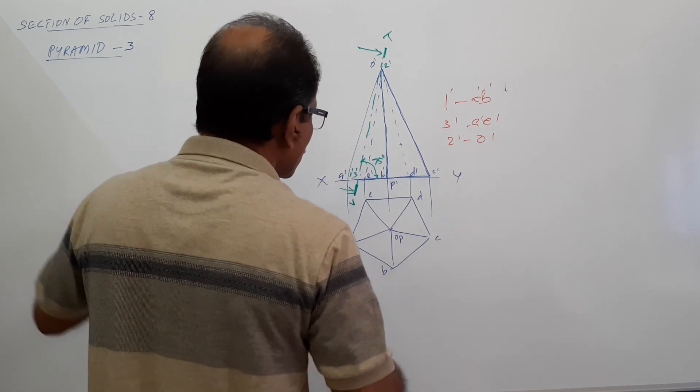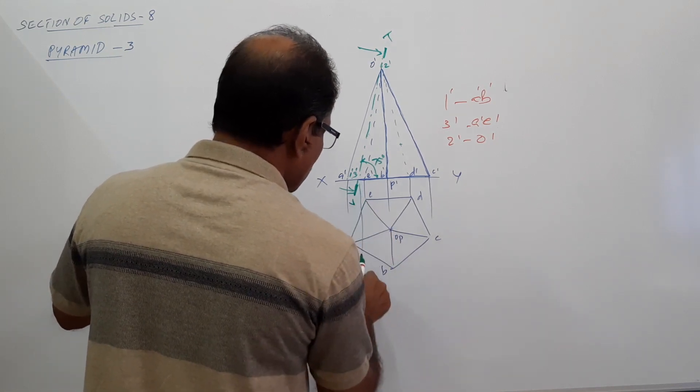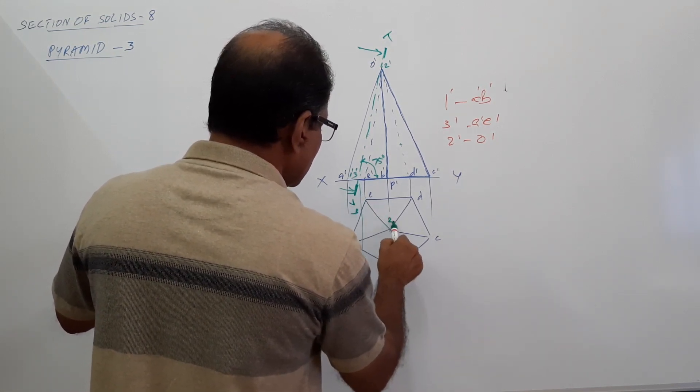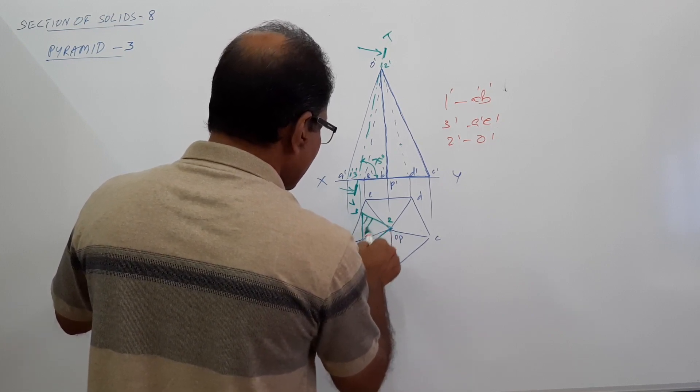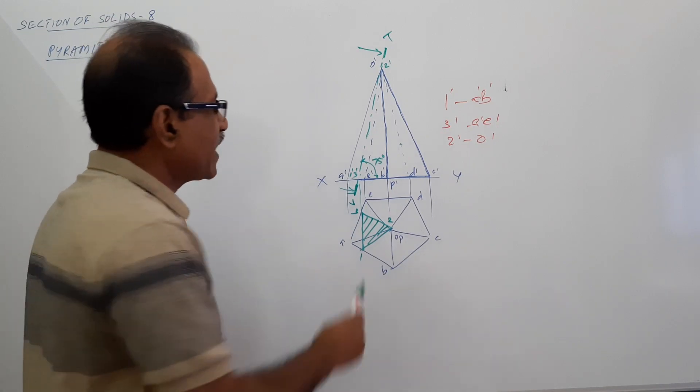Now I have to draw the plan. Draw 1 dash, 3 dash down. This is 1, this is 3, this is 2. Connect. What do you get? You get a small triangle. Hatch it. That's the sectional plan.